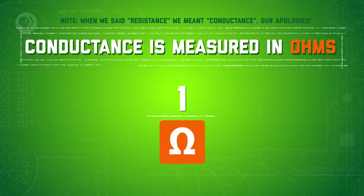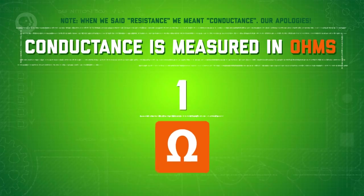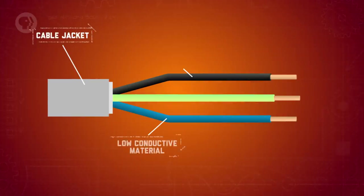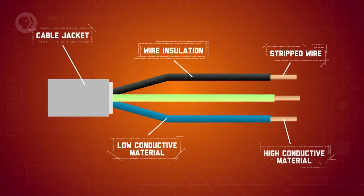Resistance is measured in units called ohms, represented by the capital Greek letter omega. So we talk about conductivity in units of inverse ohms – that is, one divided by ohms. For electrical engineers, conductivity is often a good thing, like for the material inside an electrical wire.